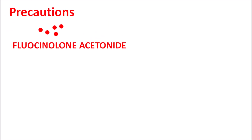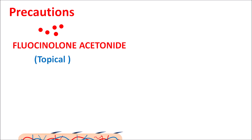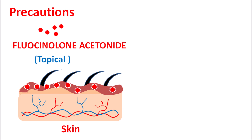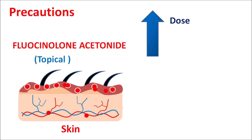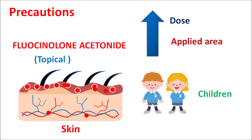One of the important precautions of fluocinolone acetonide is that when this drug is given by topical route, it is applied on the skin where irritation or inflammation exists. This drug can be applied as a thin film on the skin, but few of the molecules can be absorbed into the deeper layers and enter into the systemic circulation. This systemic absorption may produce a few systemic side effects, which are more pronounced with increased dose and increased applied area. This systemic absorption is also more pronounced in children, where the drug can be easily absorbed into the skin. That is why in children, this drug should be carefully used.